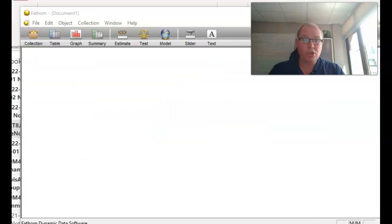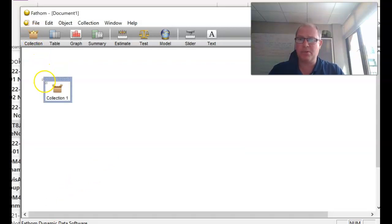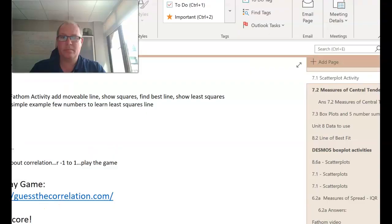Once you open Fathom 2 you will see something like this and we're going to put some data into this. To put data into this it's a drag-and-drop program. You grab the collection and pull down. Notice it's an empty box at the moment so we need to get some data to put in that box.